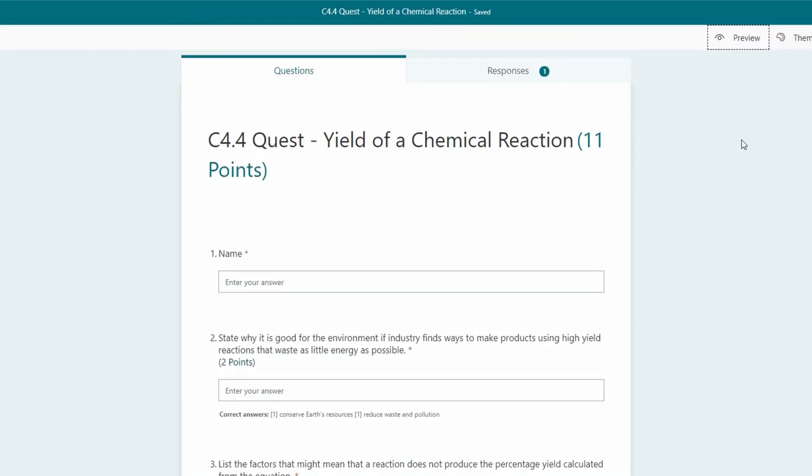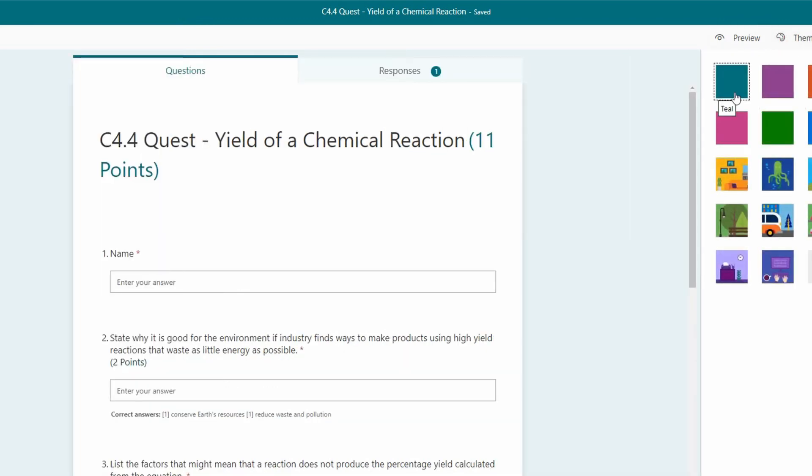But what we can do is we can add something to that just to make it a little bit more colourful. So if we click on the theme button on the top right hand side here you can see that we're provided with a number of different colours we can use or a number of different themes that Microsoft provide us with.